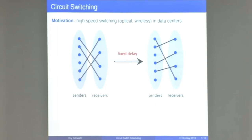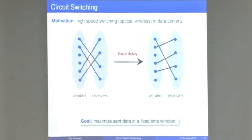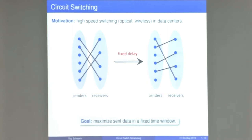The high-level goal in circuit switching is to find a sequence of matchings that maximizes the total data you can send in a given fixed time interval. Let's see the formal definition of the problem.